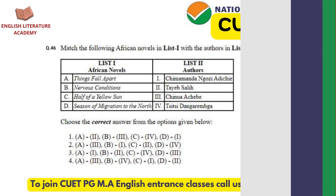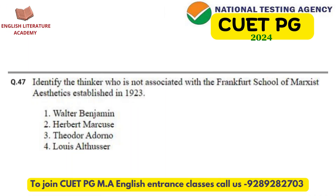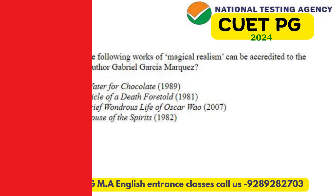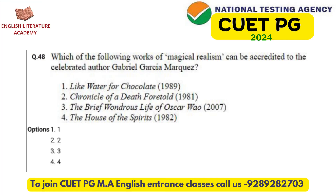To answer the 47th question, one must know about the members of the Frankfurt School of Marxist Aesthetics and identify the one who was not part of the group. The 48th question can be termed easy, as the associated answer is a novel that is part of the graduation level syllabus.